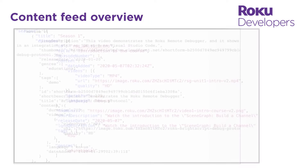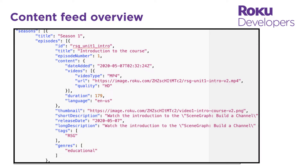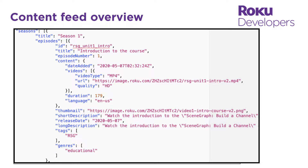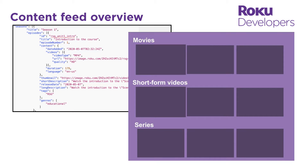The feed may also contain metadata for organizing content in your channel. The feed can include content type fields that identify whether content is a movie or TV show, tags, and genre fields that can be used to categorize content as sports, comedy, drama, and so on. You can use these types of fields, for example, to create rows of related content in your channel's homepage.